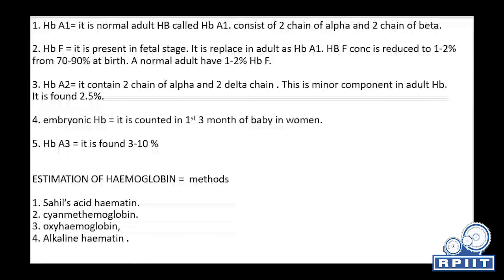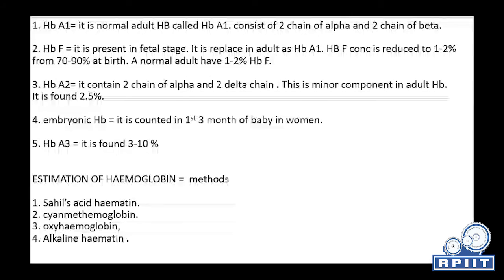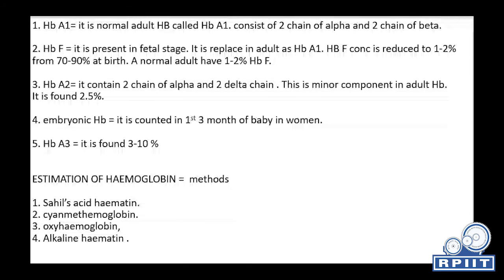HbA3 is found at 3 to 10%. For estimation of hemoglobin, we use several methods: the methemoglobin method, the cyanomethemoglobin method, the oxyhemoglobin method, and the alkaline hematin method.